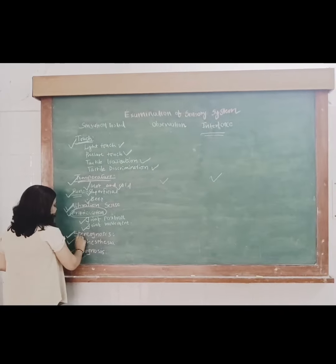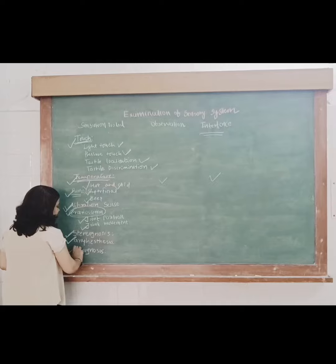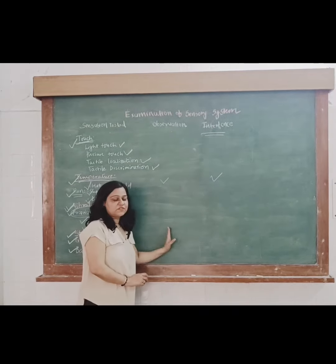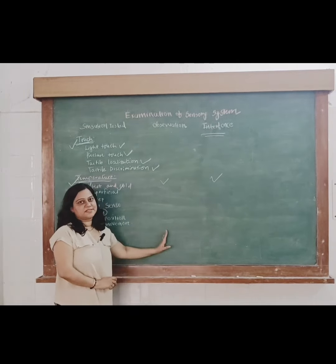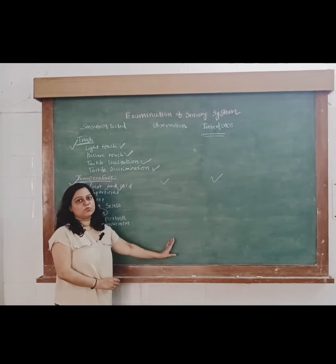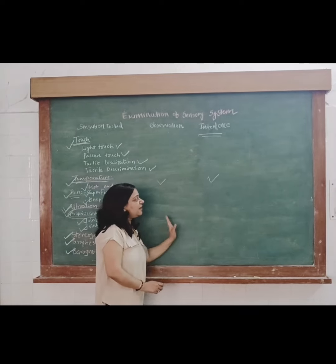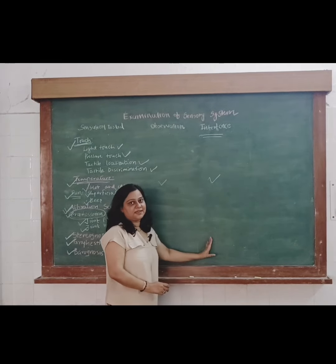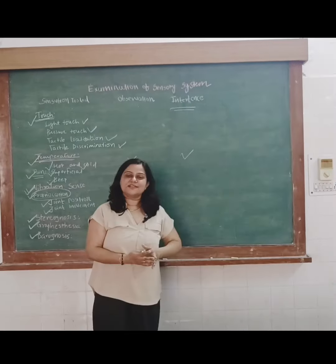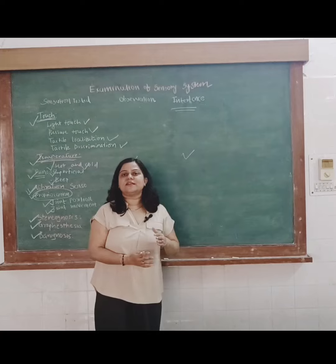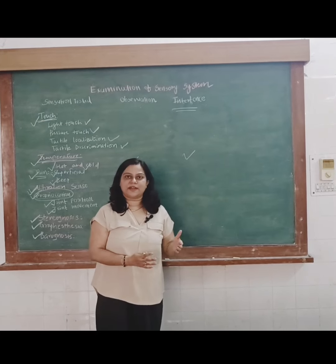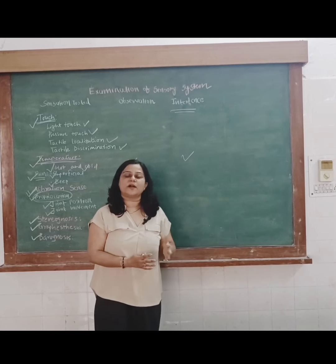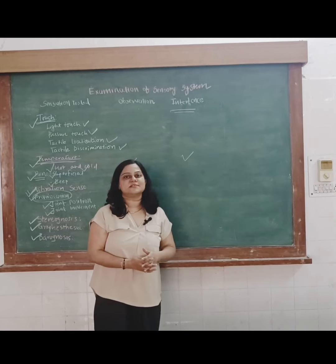Then stereognosis, graphesthesia, and barognosis. You write your observation whether it is perceived equally on both sides or not, and write your inference whether it is intact or impaired. If it is impaired, write down your finding — how much it is impaired and on what part of the body it is impaired.